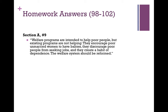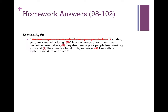Welfare programs are intended to help poor people, but existing welfare programs are not helping. They encourage poor, unmarried women to have babies; they discourage poor people from seeking jobs; and they create a habit of dependence. The welfare system should be reformed. We notice we can cross out some information not vital to the argument. The main conclusion the person wants to reach is that the welfare system should be reformed, and they draw an intermediate conclusion along the way that programs aren't helping.